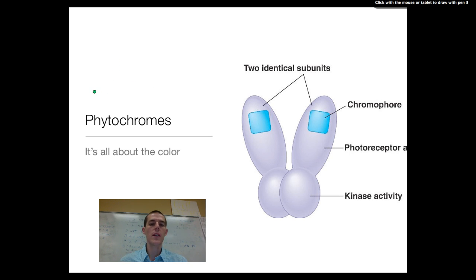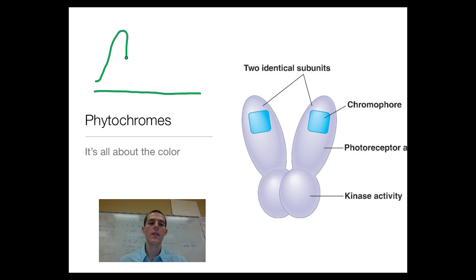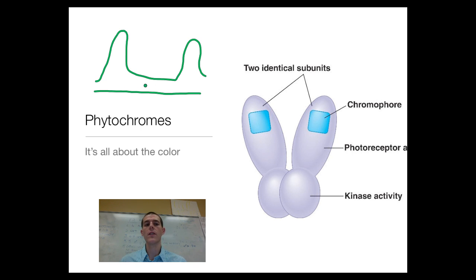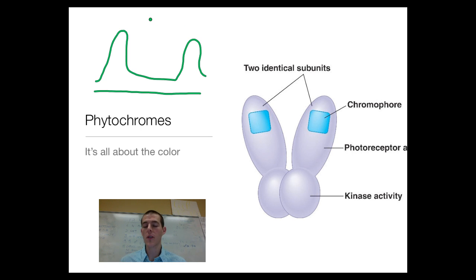Looking at the whole spectrum of visible light, scientists have shown that plants respond best to light in the red end of the spectrum and in the blue end of the spectrum. They could care less about the colors in between — this is actually why plants are green, because those middle colors are reflected back to our eyes while red and blue are picked up. Plants have blue light receptors, but we're not going to worry much about them today; we'll concern ourselves mostly with phytochromes.